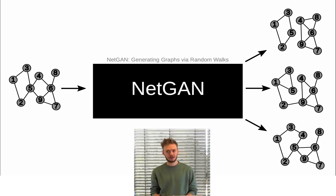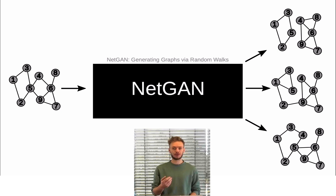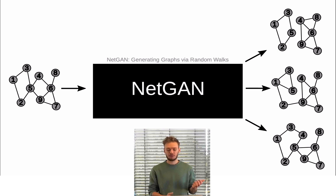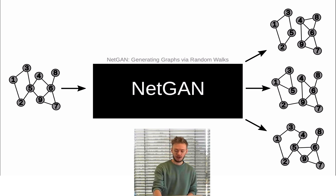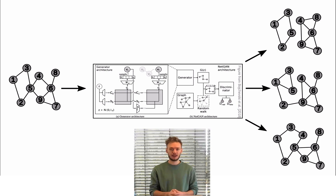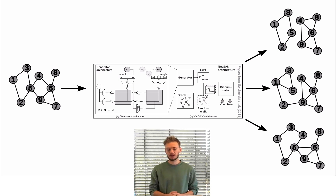NetGAN is a recently proposed graph generative model. This means it takes as input a single, undirected, unweighted graph and tries to generalize it by outputting new graphs that are different from the input graph but still share many of its topological properties, like for example the triangle count or the degree distribution. NetGAN does so by training a complicated GAN architecture to learn the distribution of random walks over the input graph. Once training is finished, it uses this GAN to generate a set of synthetic random walks which are then transformed to a new graph.